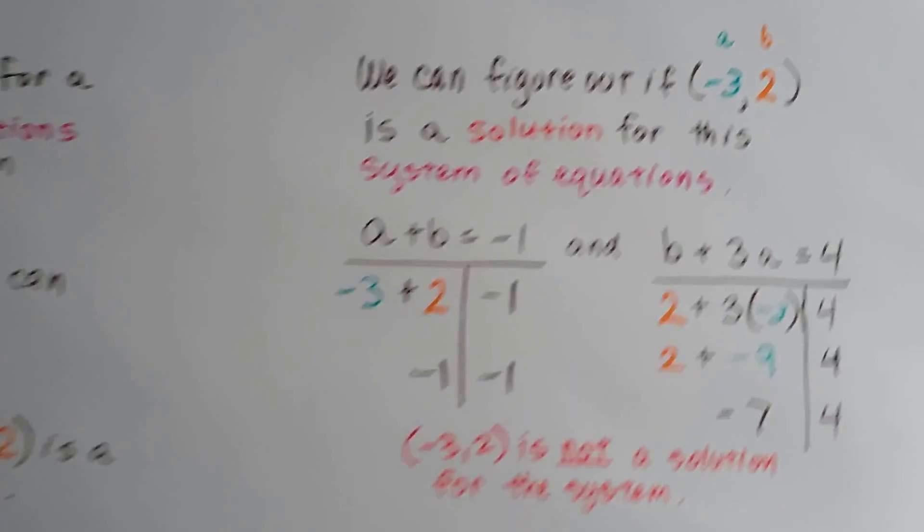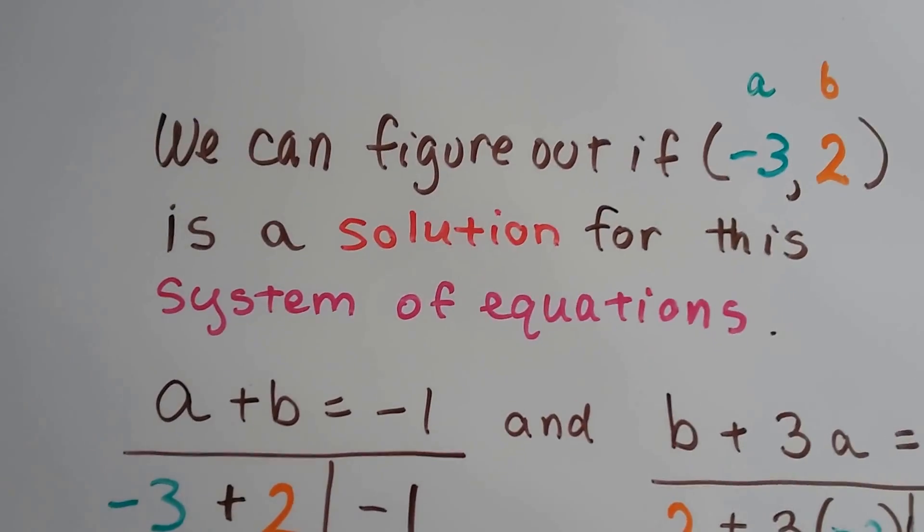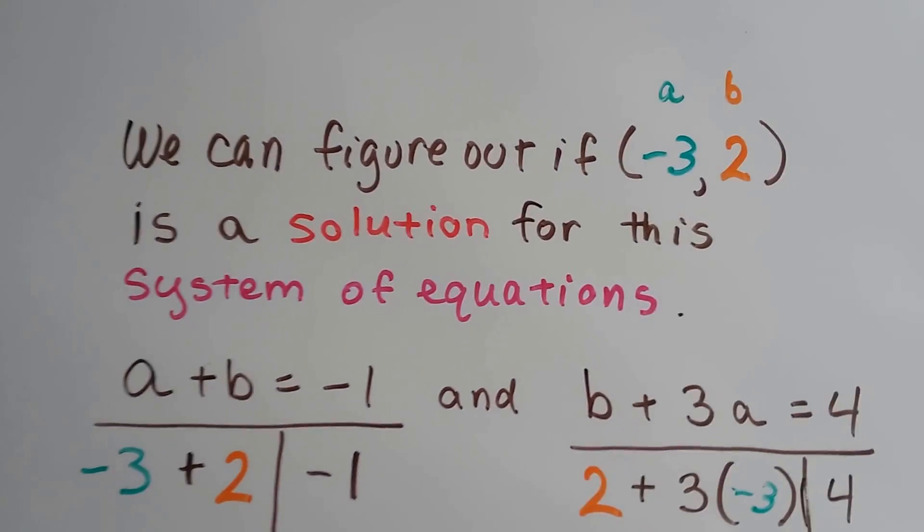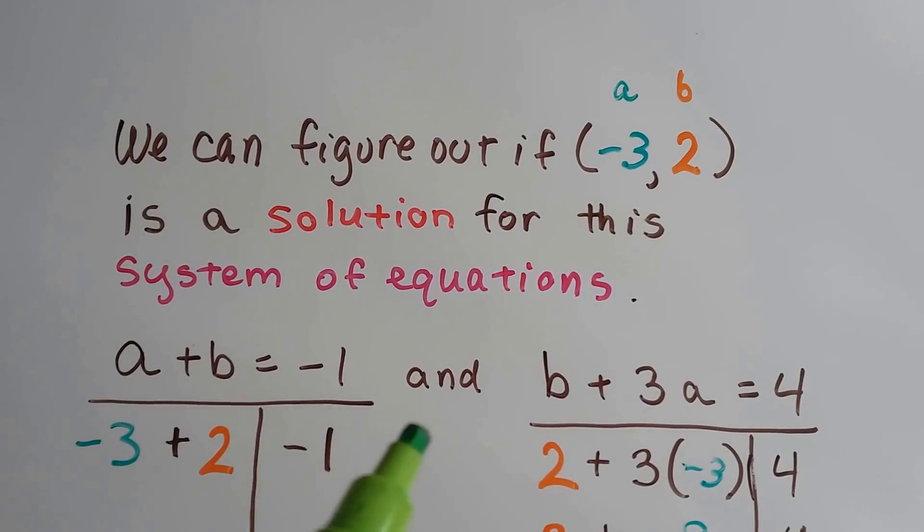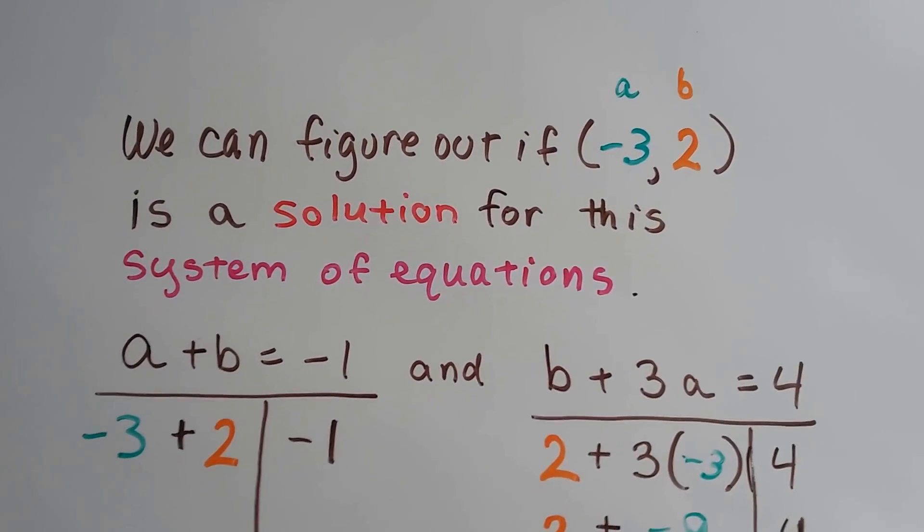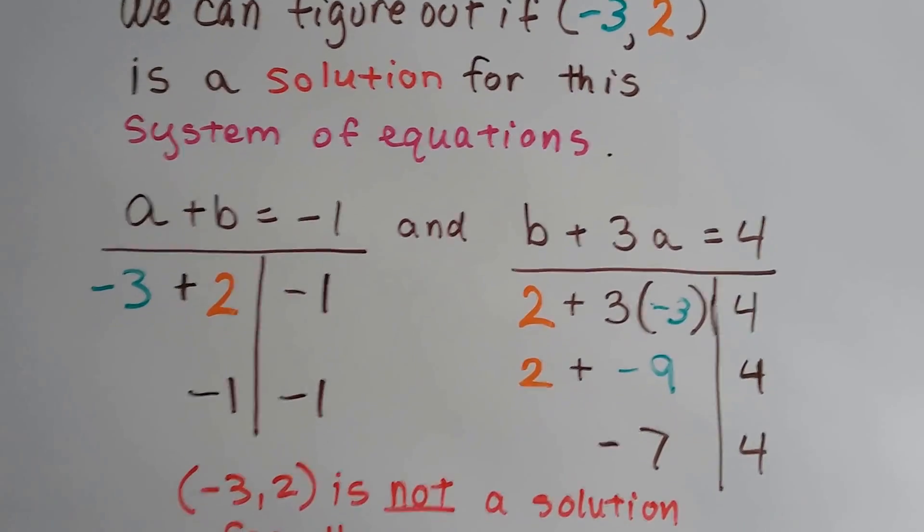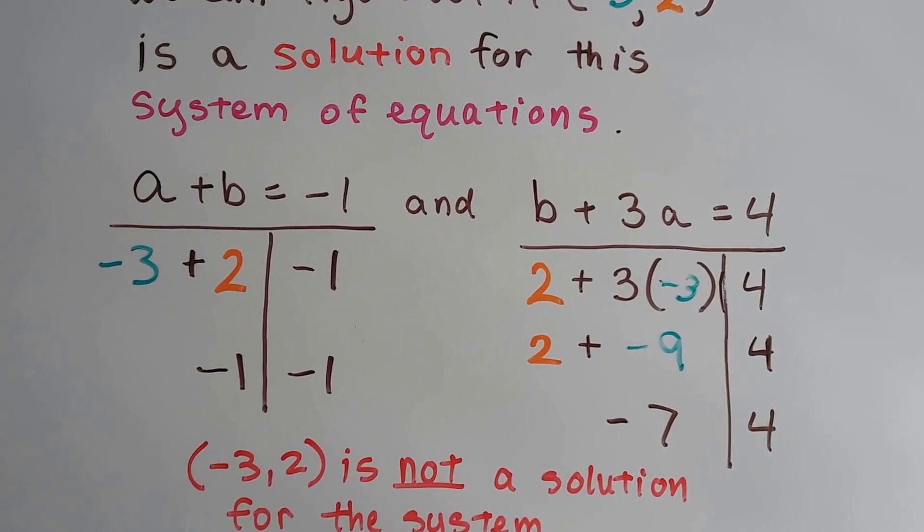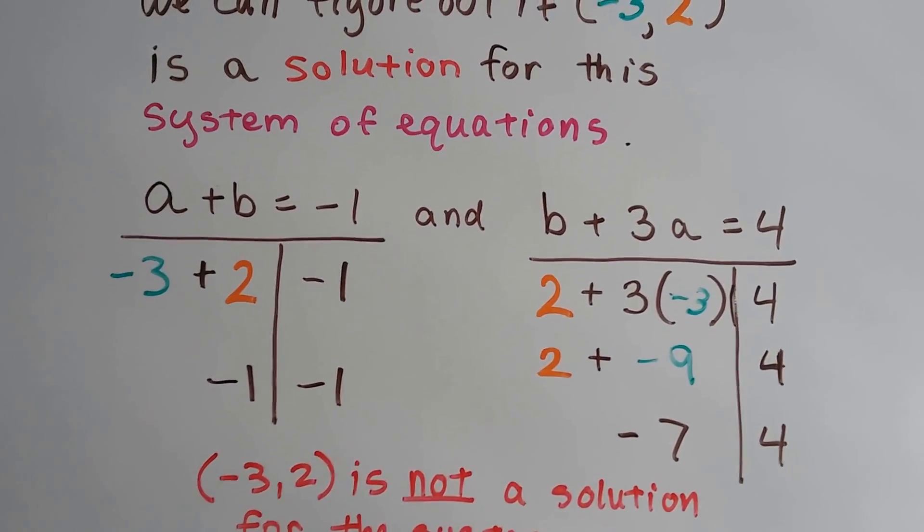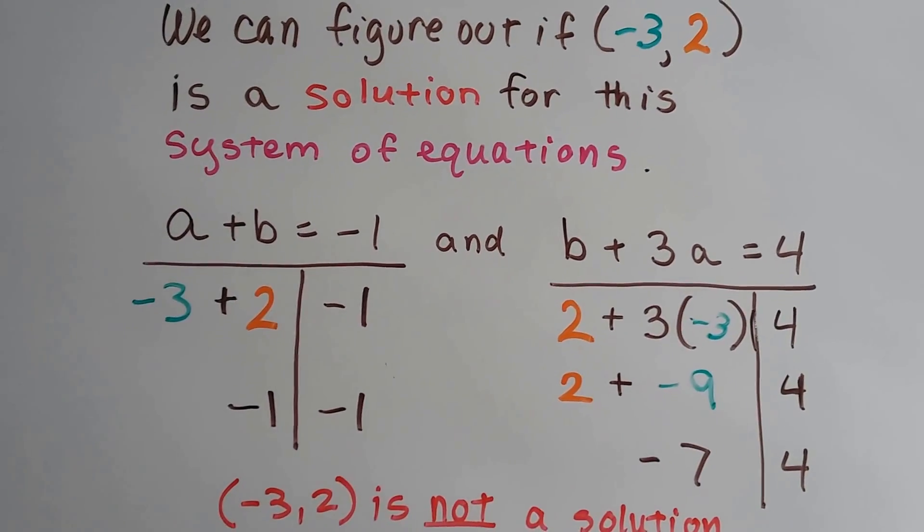We can figure out if negative 3 and 2 as a and b is a solution for this system of equations. So we've got a plus b equals negative 1, and b plus 3a equals 4. We draw a line underneath them, and we draw a vertical line coming down from the equal sign for each side, and we plug in negative 3 for a and 2 for b.